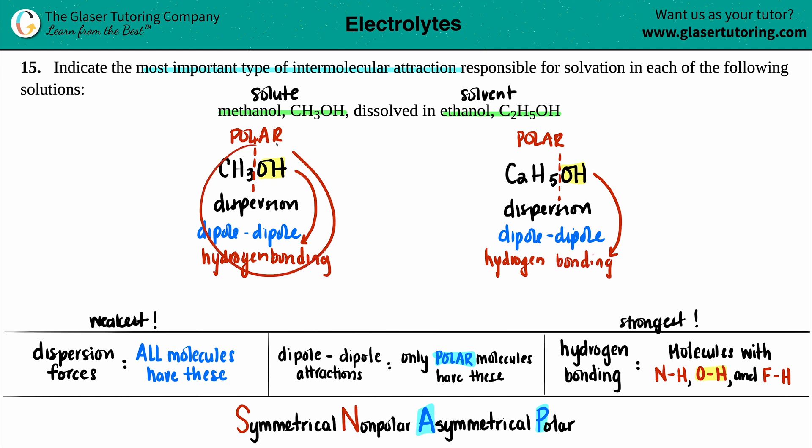Both of these, the methanol and the ethanol, they have all three intermolecular forces. But the question is, which one is the most important type? The most important type is always going to be the strongest that they share. Since for methanol you have hydrogen bonding, and for ethanol you also have hydrogen bonding, that is the most important type of intermolecular force.